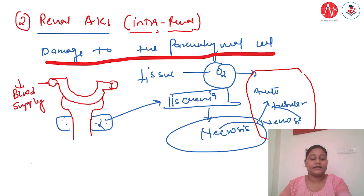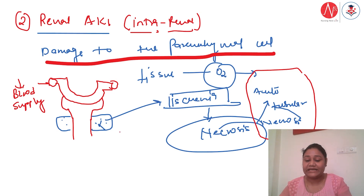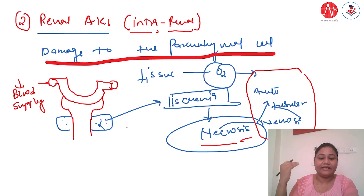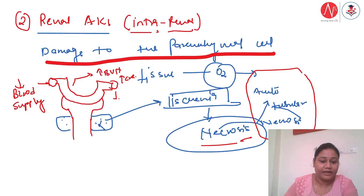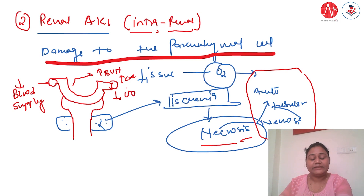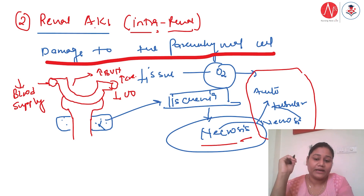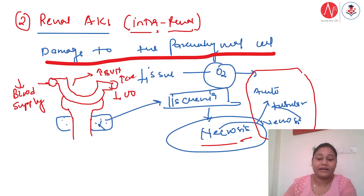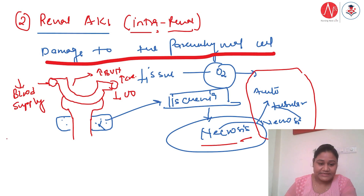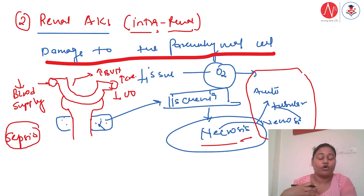Tissue requires oxygen for proper metabolic functioning. Because perfusion is low, tissues don't get enough oxygen, leading to ischemia. If untreated, ischemia results in cell death — necrosis. This condition is called acute tubular necrosis. So the renal stage of acute kidney injury occurs due to acute tubular necrosis from prolonged decreased blood supply. As a result, BUN and creatinine rise and urine output decreases.